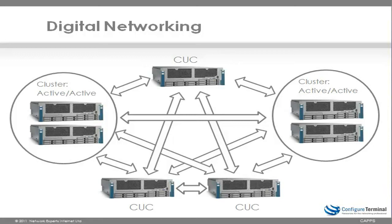Another advantage is that both servers are active. This is a major advantage over Cisco Unity, which only had active-passive clusters. In Unity Connection, both servers can receive calls, and the information is replicated automatically between the two servers in a cluster. One of the servers is set up as a publisher, the other as a subscriber, but they are both active, and if either server fails, the cluster will continue as normal, just with a reduced number of ports.